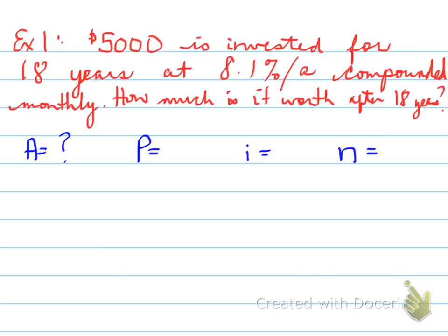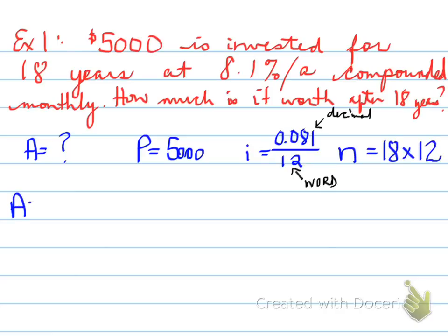So, A, we don't know. Why do we know A? That's the future amount. We don't know how much it's worth in 18 years. But we do know the principal and the interest rate. Now, be careful here, i is 0.081, right? That's the decimal, divided by the word. What's the word, folks? The word is monthly. So, because it's monthly, we take it and we divide by 12. So, again, the top part is the decimal percent. The bottom number is the word. And n is 18 years times the word, which is 12. Plug it into the formula, 5000, bracket 1 plus i to the power of n.